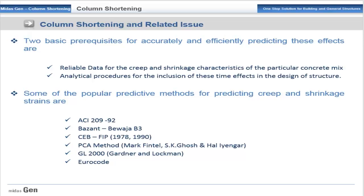The inelastic properties include creep, shrinkage, and modulus of elasticity that varies with time. There are two prerequisites for accurately predicting these effects: one is reliable data for creep and shrinkage characteristics for a particular concrete mix, and second is a reliable analytical procedure for including these time effects in design. In Midas Gen, popular predicting methods include ACI-209, Bazant-Baweja B3, CEB-FIP, the PCA method using Mark and Fintel, Eskagosian-Hall-Ayer, and Iyengar method.